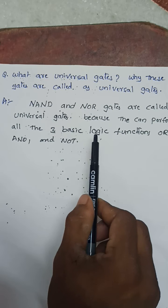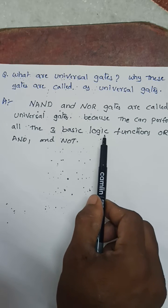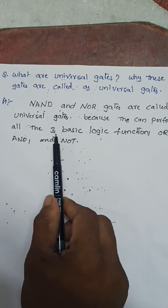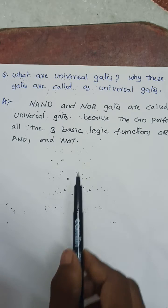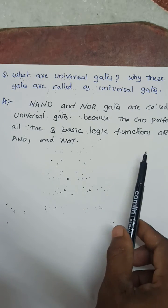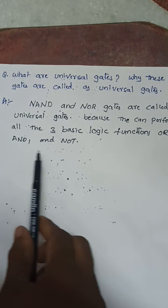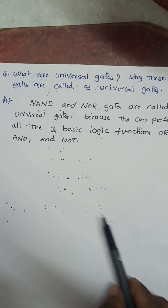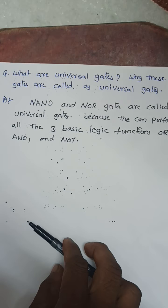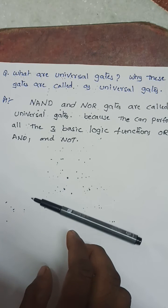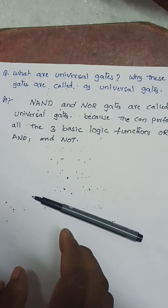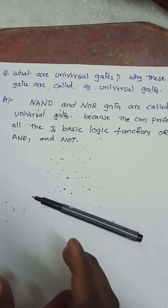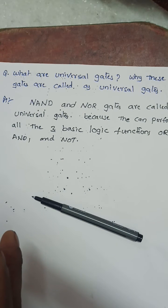Why these gates are called universal gates? Because they can perform all the three basic logic functions: OR, NAND, NOR. These three are basic logic gates. And by using NAND gate and NOR gate, we can implement any function of the three basic logic gates.